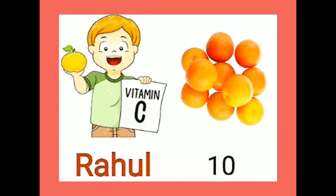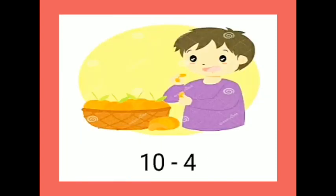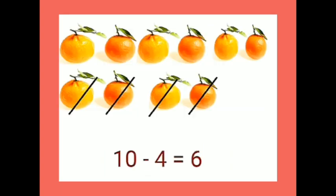He is Rahul and he loves oranges. As he knows, oranges are a rich source of vitamin C. He has 10 oranges with him. He gave 4 oranges to his younger brother. Now how many oranges does he have? 10 minus 4 — now he has 6 oranges.